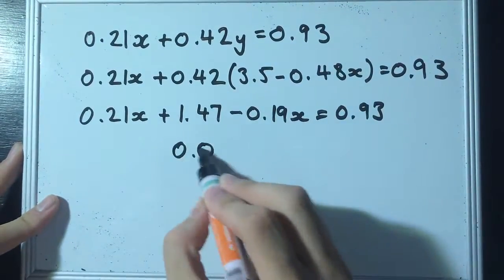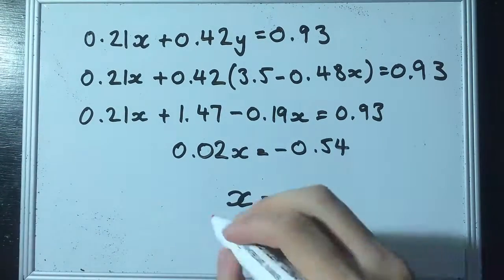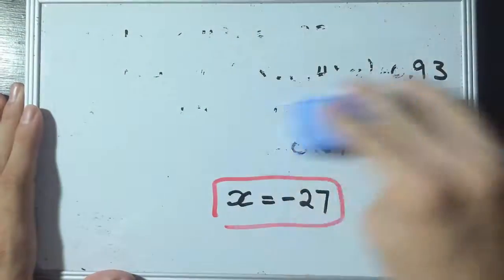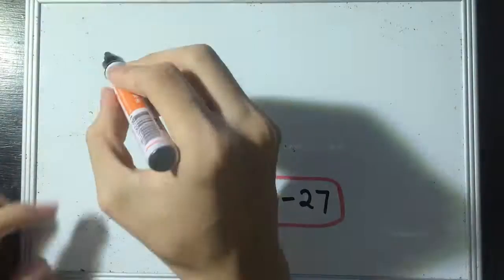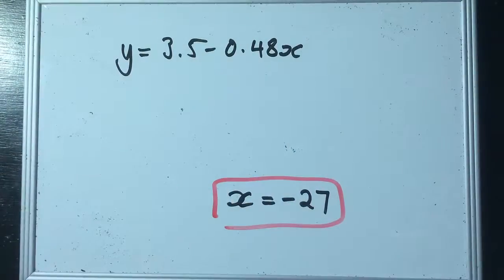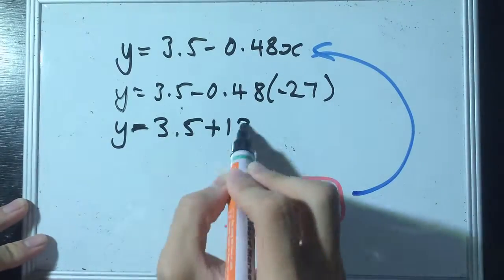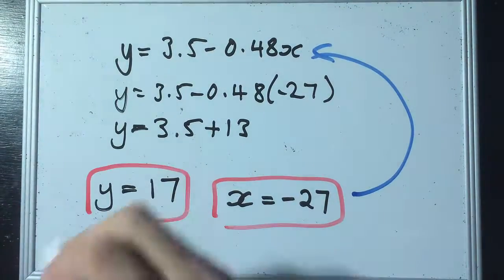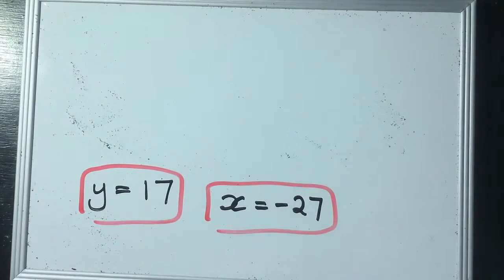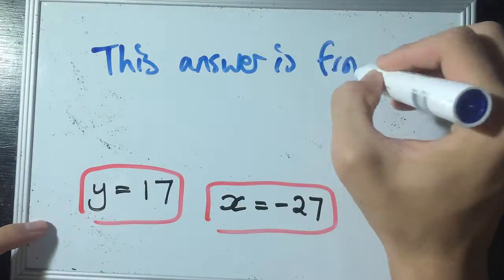And from the equation, by solving it, x comes out to be negative 27. So, now we take this value of x and substitute it back into the expression for y. We'll find that y equals 17. So, x is minus 27, y is 17. This is using two significant figures, which is quite reasonable.